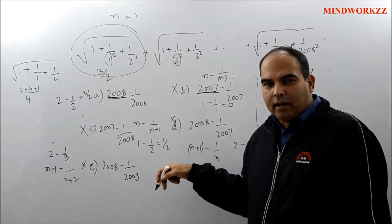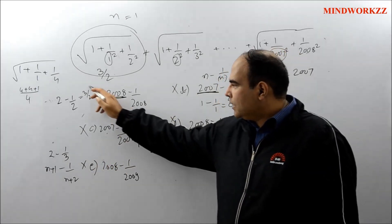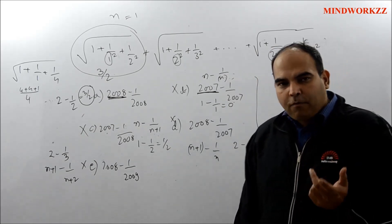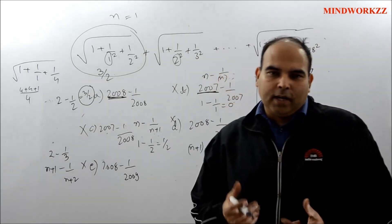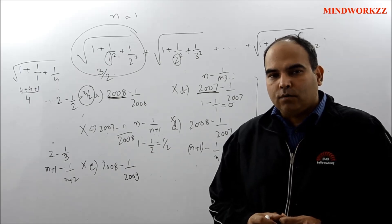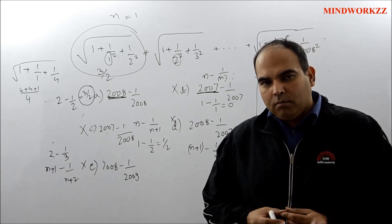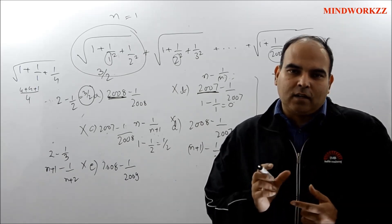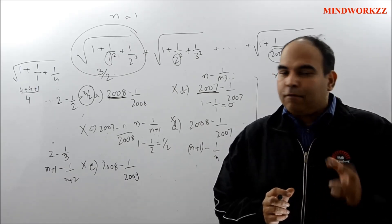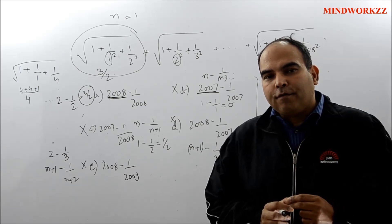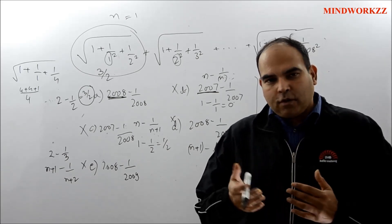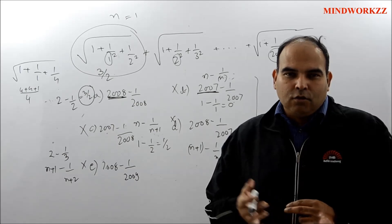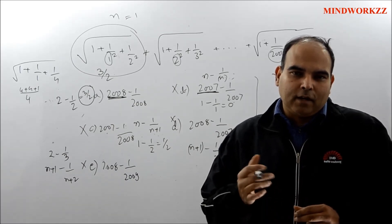Since Options B, C, D, and E are all rejected, only Option A stands — so it has to be the correct answer. If two options had both given 3/2, you would simply try one more term to find the value at which those two options start differing from each other. Normally with two or three values you'll be able to find the term where only one option stands.